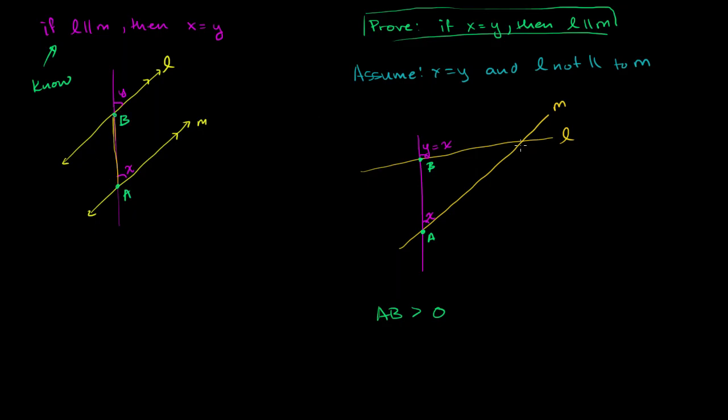So when we assume that these two things are not parallel, we form ourselves a nice little triangle here, where AB is one of the sides. And the other two sides are, I guess we could label this point of intersection C. The other two sides are line segment BC and line segment AC. And we know a lot about finding the angles of triangles.